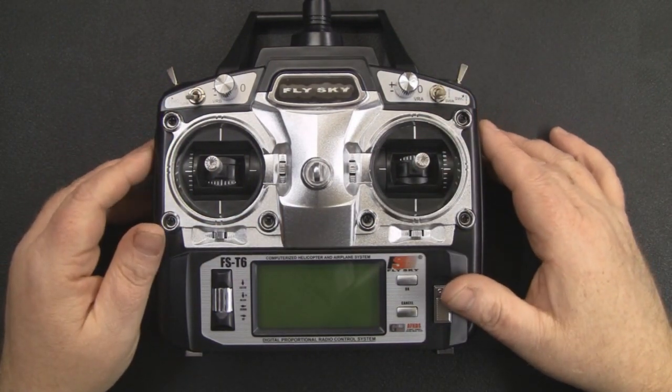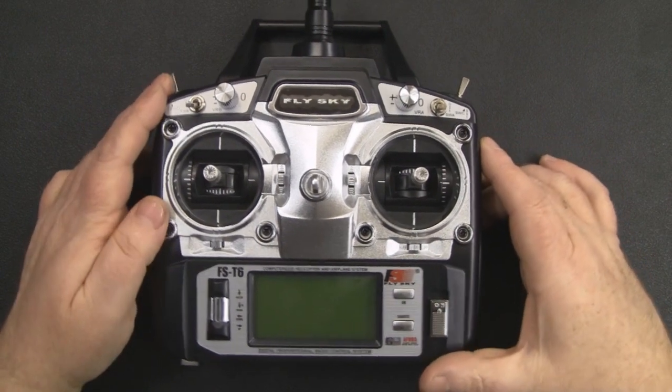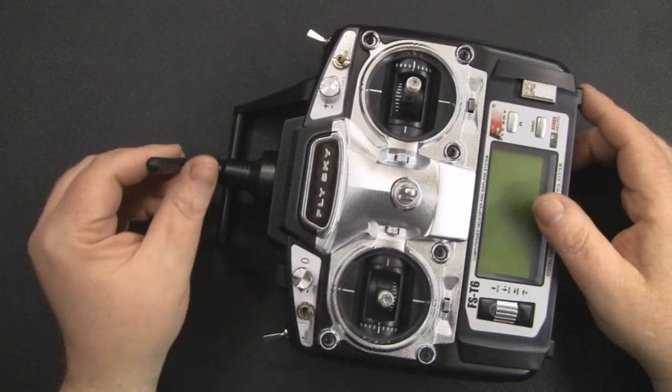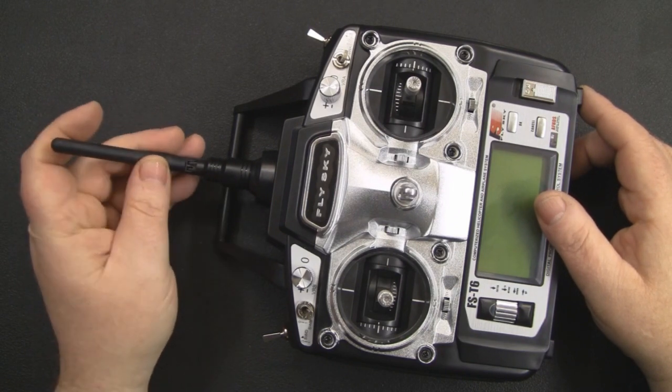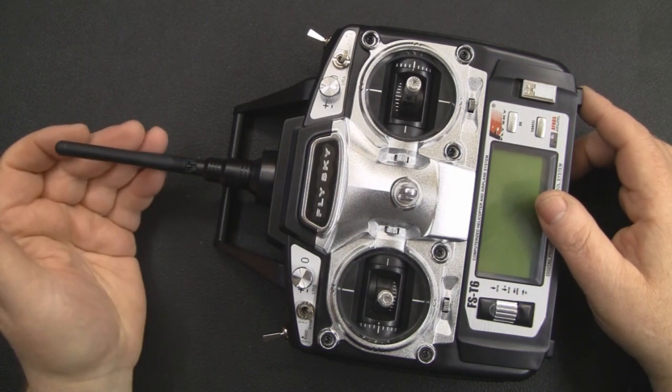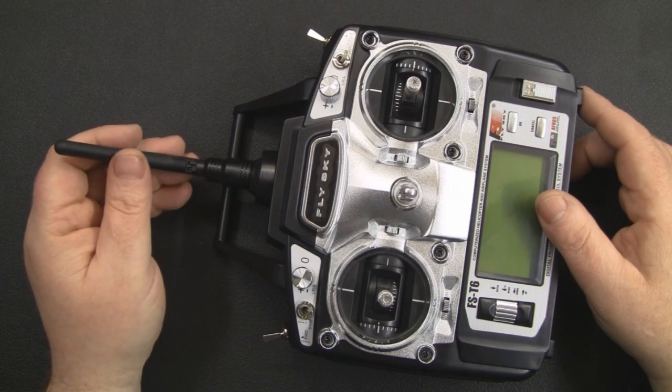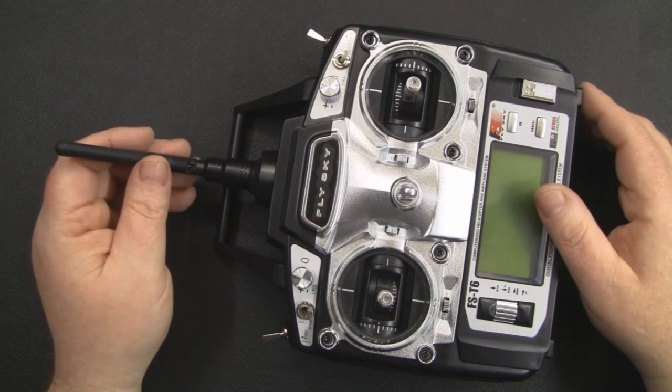One thing that a lot of people moan about is the range. What I thought we'd do is actually remove the stock rubber duck antenna here and swap it out with a bulkhead connector. That will allow us to add any antenna that we actually want on this and hopefully fix some of those range issues.